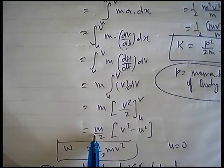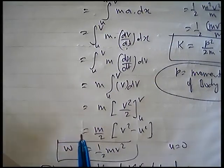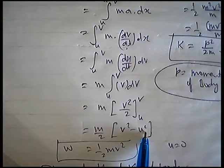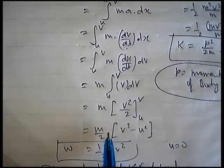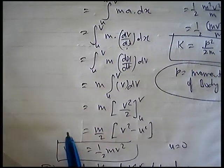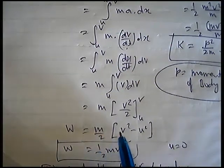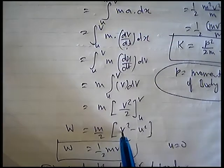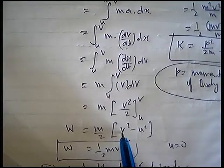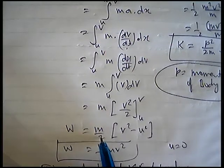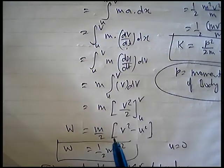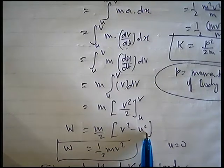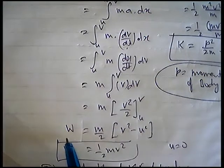Opening the formula, we get: W = ½mv² − ½mv². So W = ½mv² (final) minus ½mv² (initial). Here v is the final velocity and u is the initial velocity. So ½mv² (final) becomes the final kinetic energy and ½mu² becomes the initial kinetic energy.